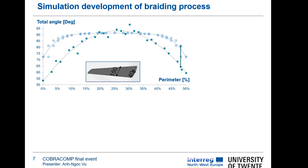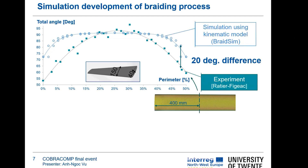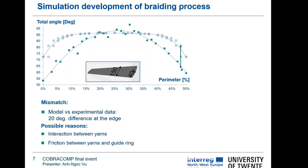At the beginning of the project, we tried to validate our kinematic model with experimental data provided by our partner. The mandrel has an elliptic cross-section. Here I plot the total braid angle versus the perimeter of the cross-section of the mandrel at 400 mm from the tip of the mandrel. As you can see, at the middle of the mandrel it predicts the braid angle quite well. However, at the edge of the mandrel, there is about a 20-degree difference between the simulated and experimental data. The possible reason is due to neglecting the interaction between yarns and also friction between yarn and the bearing.